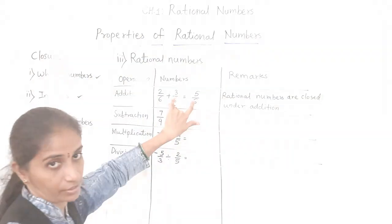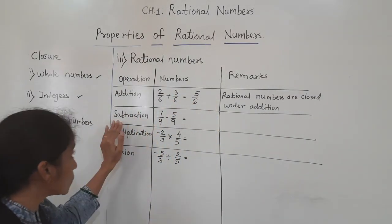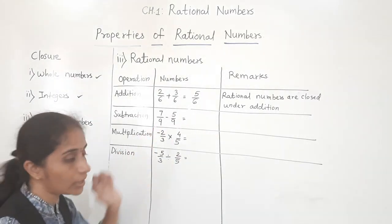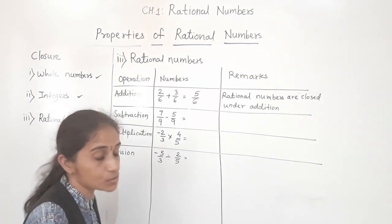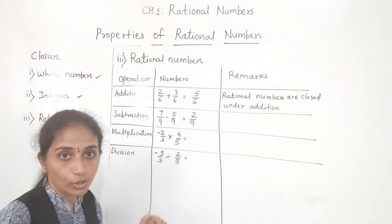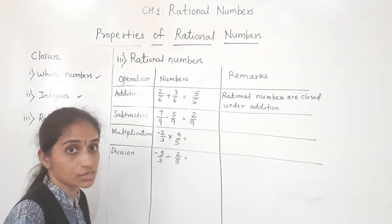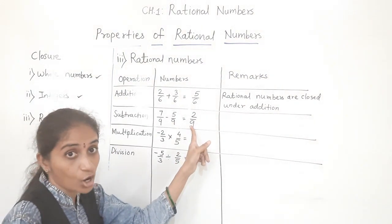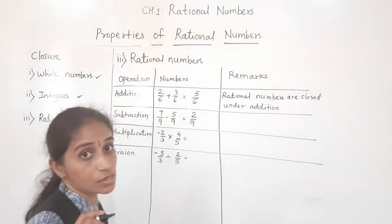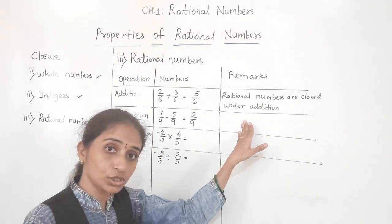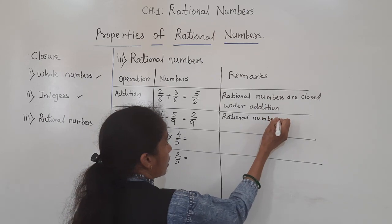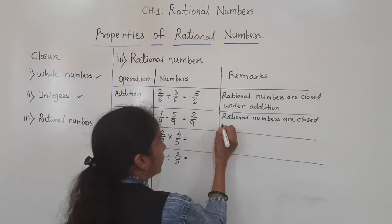You can take your own example and verify — you will get another rational number. Now for subtraction: take 7 upon 9 minus 5 upon 9. Denominators are same, so subtract the numerators: 7 minus 5 equals 2, giving 2 upon 9. Is 2 upon 9 a rational number? Yes — it is written in P upon Q form where Q is not equal to zero. So rational numbers are closed under subtraction.